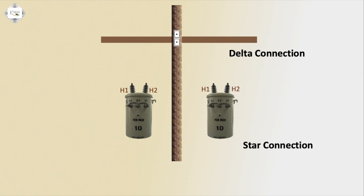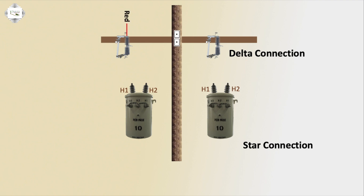The low voltage side uses an interconnection — meaning a delta-to-interconnection configuration. There is a fuse connection on the first phase. The first transformer's high voltage side input is the blue phase.